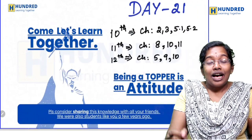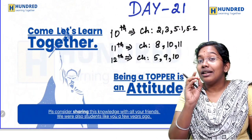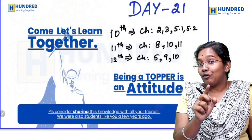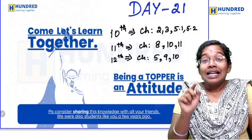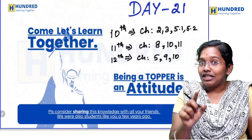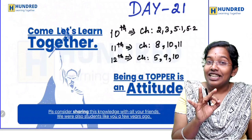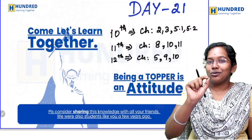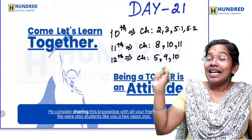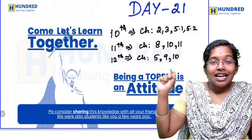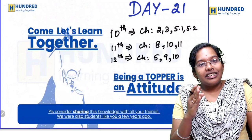So far, 20 days: 10th standard students — 2nd chapter, 3rd chapter, and every chapter are completed. 5.1 and 5.2 will be completed. 11th standard students: chapters 8, 10, and 11 — 3 heavy-weighted chapters are complete. Now we will complete the 12th chapter. 12th standard students: chapters 5, 9, and 10 are complete, and now we will complete the 10th chapter and the 200 sums.